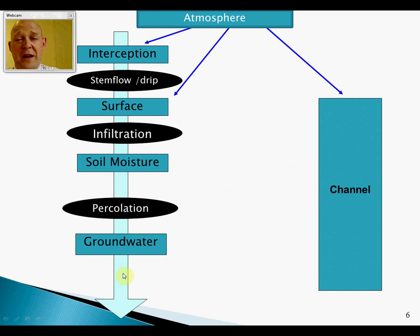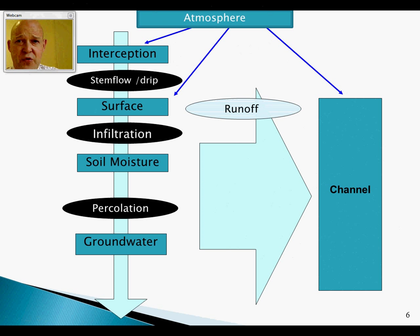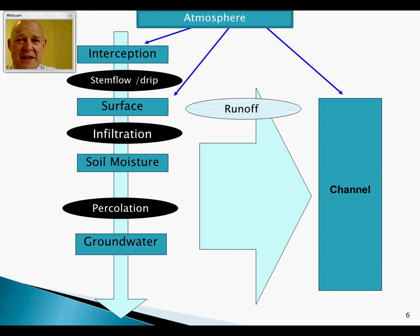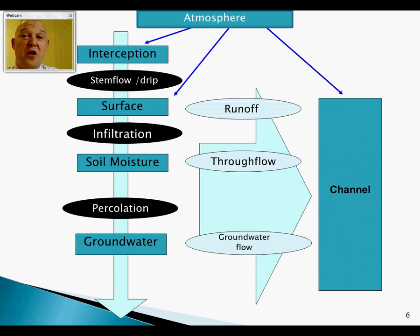Some groundwater seeps deeper and never reaches the channel, but we don't focus on that much. Most interesting for flooding are the horizontal transfer processes. There are two types of overland flow: Hortonian overland flow, where the rate of precipitation exceeds the rate of infiltration, and saturated excess, where the ground is so wet no more infiltration can occur. Water moving through the unsaturated zone is through flow; through the saturated zone is groundwater flow, which contributes base flow — keeping the river flowing even during long dry periods.